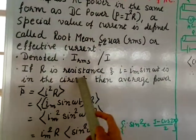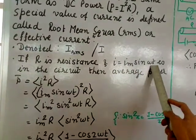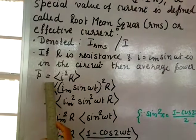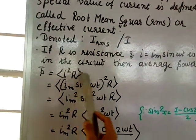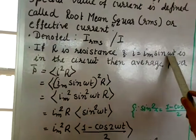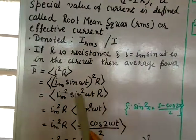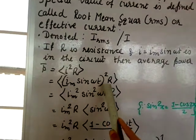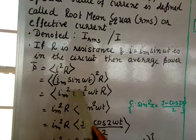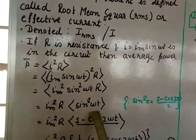If R is the resistance and current I = I_m sin(ωt) is in the circuit, then average power P = ⟨I²R⟩. This bracket notation means it is the average. Substituting I = I_m sin(ωt), we get P = ⟨I_m² sin²(ωt) · R⟩. Taking I_m² and R outside the average, we get I_m² R · ⟨sin²(ωt)⟩.